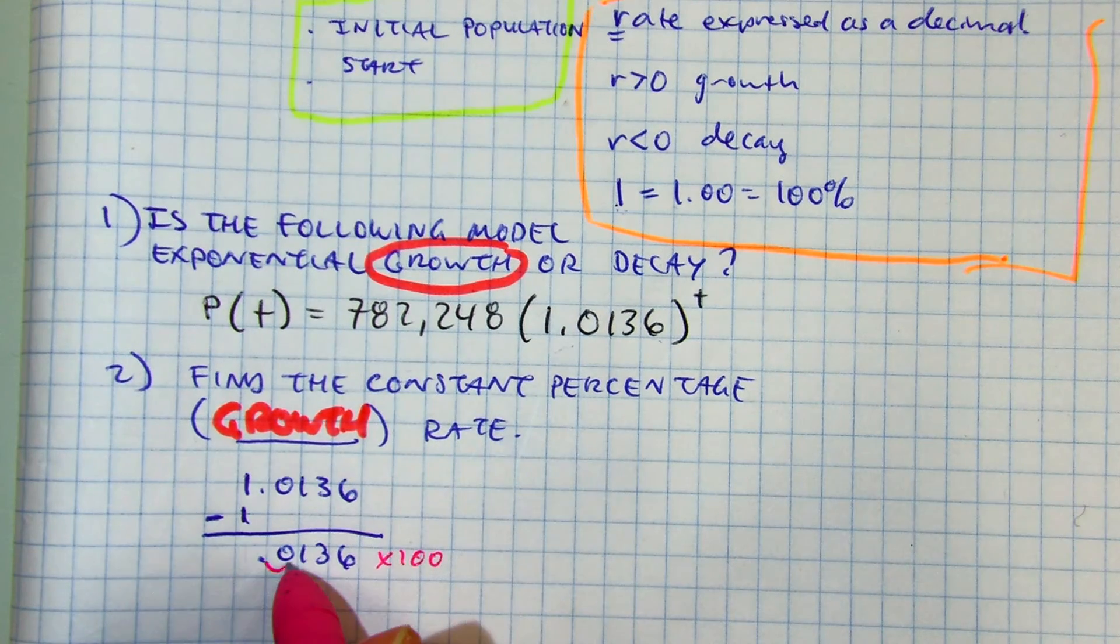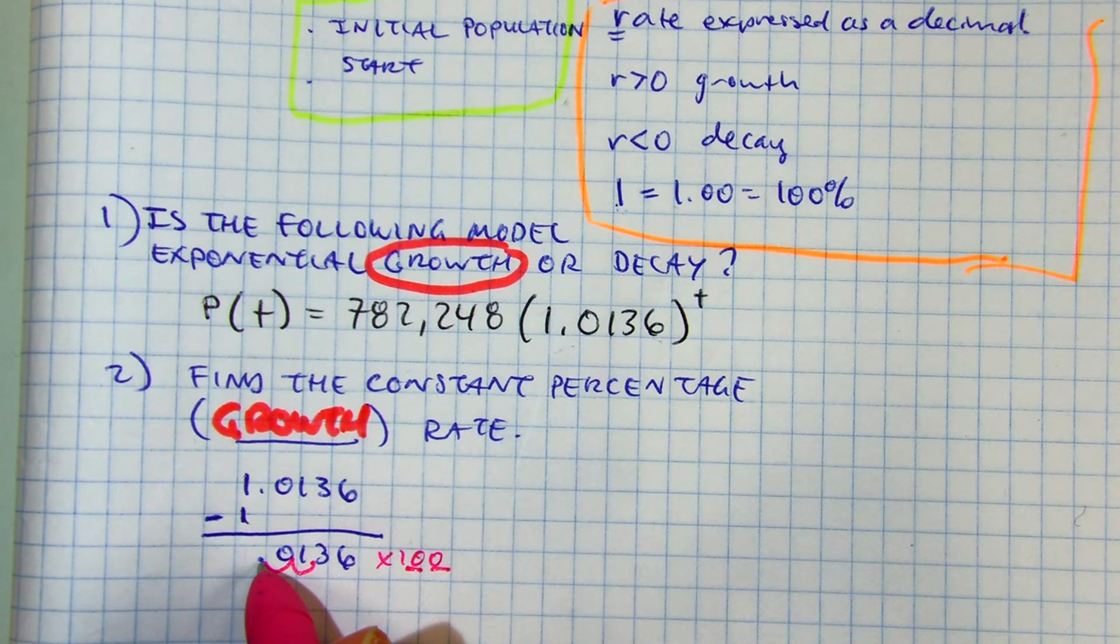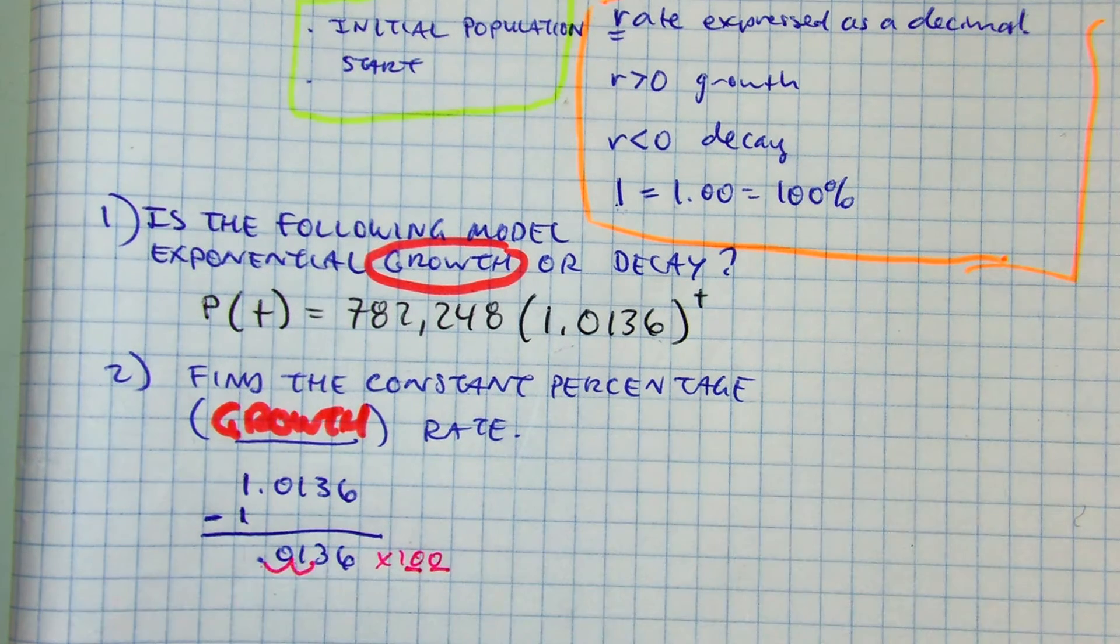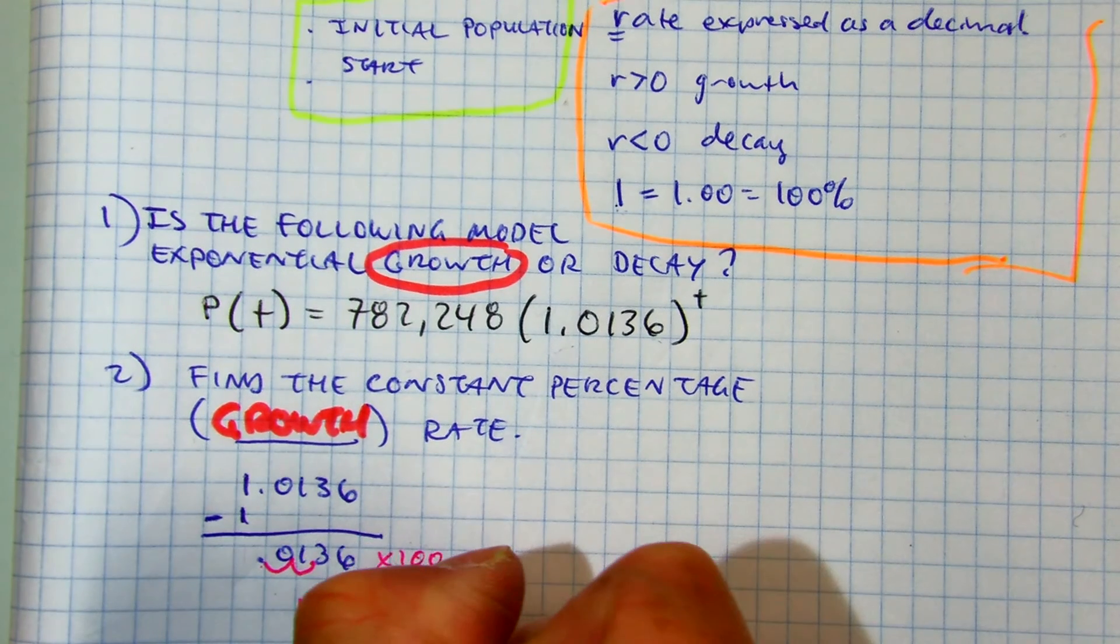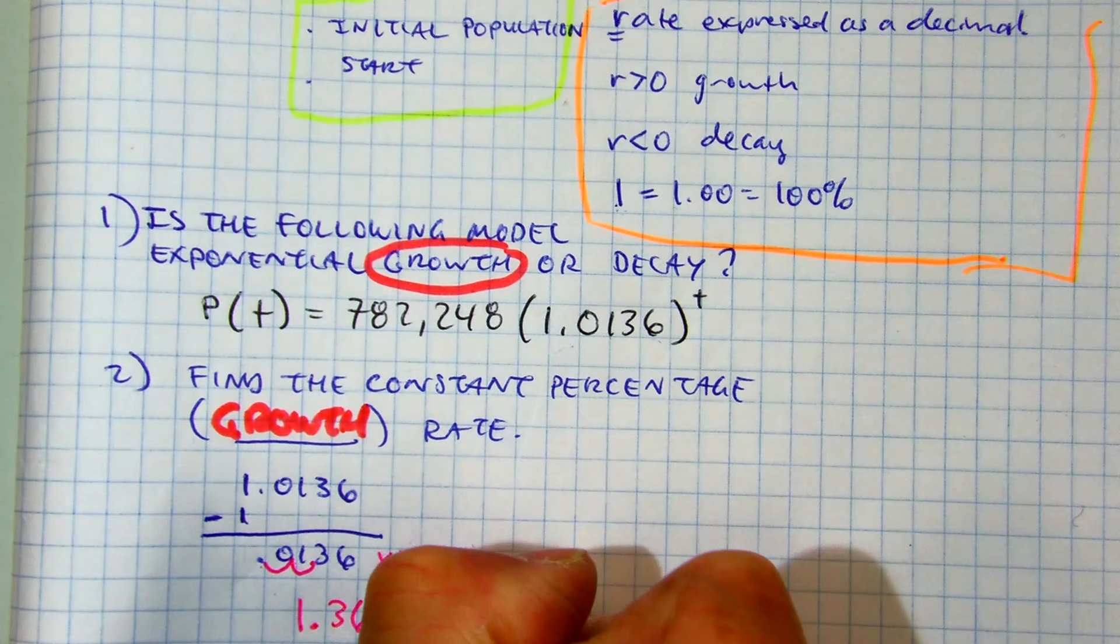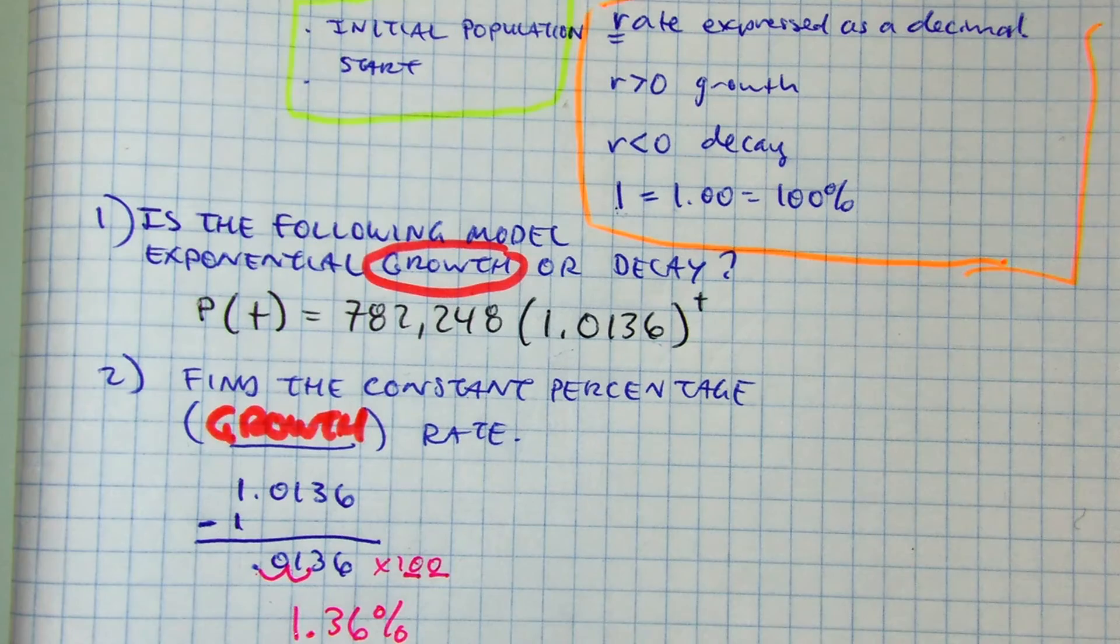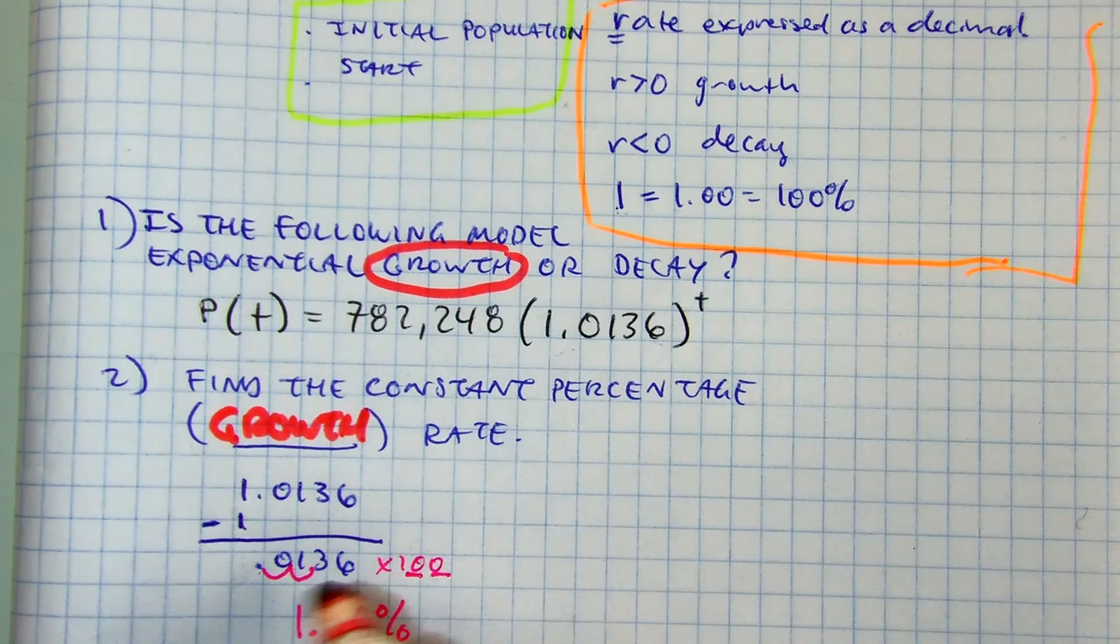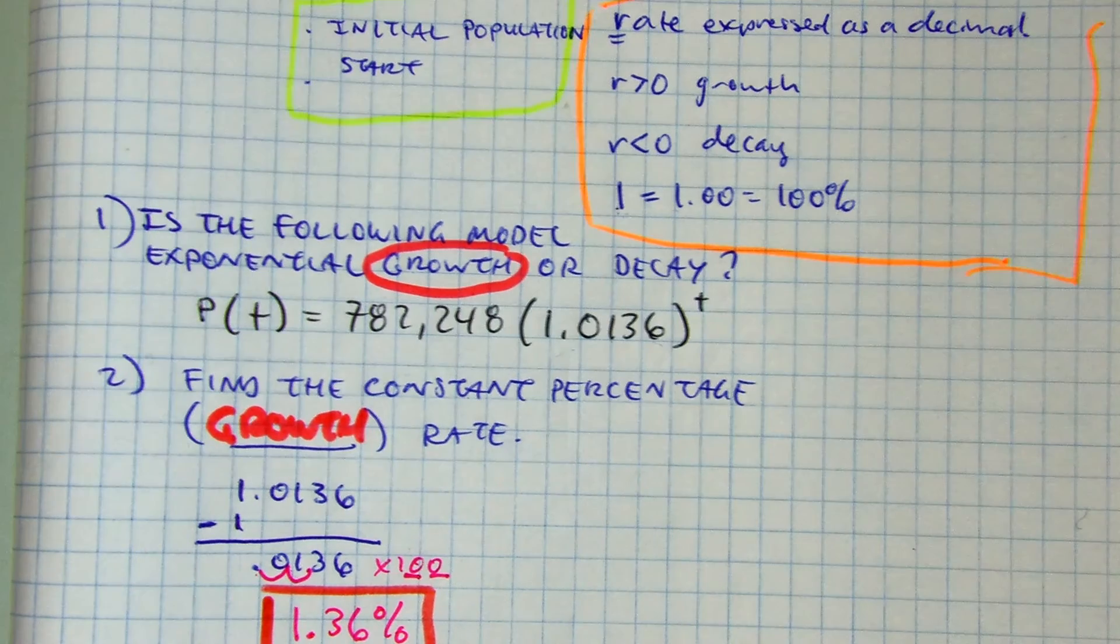And what that does is, 1, 2. There are two zeros. 1, 2. You just move it two decimal places to the right. 1, 2. And that gives us what number, class? 1.36. So my constant percentage of growth is 1.36%.